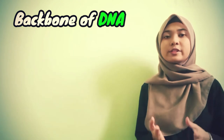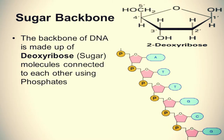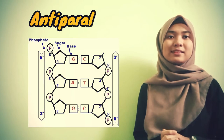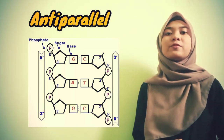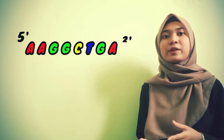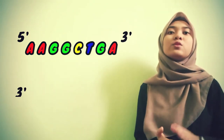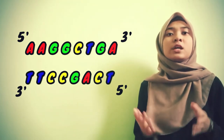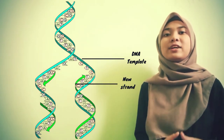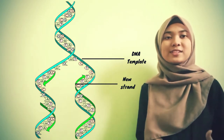Moving on to the backbone of each strand: it is a repeating phosphate-deoxyribose sugar polymer connected by phosphodiester bonds. The sugar-phosphate backbone has 5-prime to 3-prime polarity, and understanding this polarity is essential to understanding how DNA fulfills its role. In double-stranded DNA, the two backbones are antiparallel. Each strand serves as a template for the synthesis of its complementary strand. For example, a sequence A-A-G-G-C-T-G-A from 5-prime to 3-prime has a complementary strand T-T-C-C-G-A-C-T in the 3-prime to 5-prime direction. This is how the two DNA strands separate and each serve as a template for a new strand.